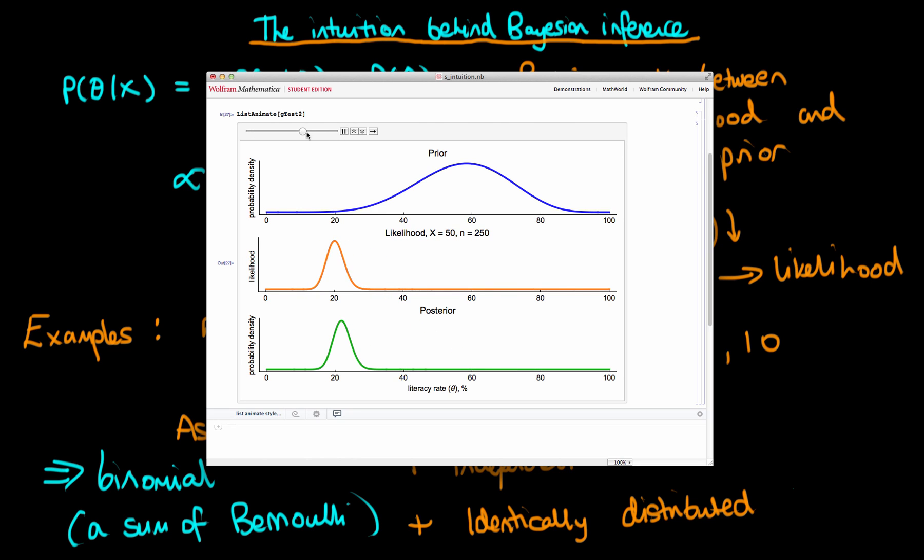And so we can see that as we increase my sample size here, that the posterior becomes narrower and it more and more reflects the weight of the data. Our prior prejudices just have less and less effect. And that's exactly what we would want to happen. As we collect more data, we would want to give more and more weight to the data.